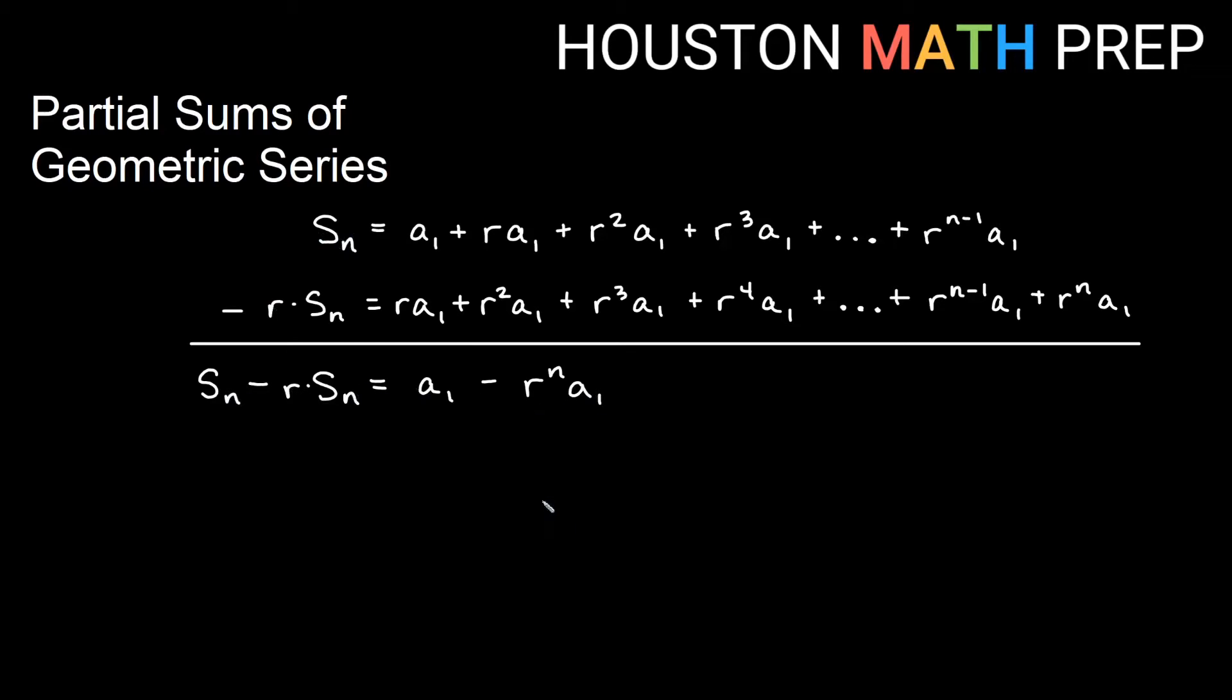So we get this expression here and then we simply factor out the common factor on both sides. So S sub n is common on the left. We'll factor that out. A sub 1 is common on the right. We factor that out. We get this expression and then to solve for this and get a nice little formula, I go ahead and just divide by what's in parentheses here and we get the formula for the partial sum of a geometric series and that's the first term times 1 minus the common ratio to the n all over 1 minus that common ratio.